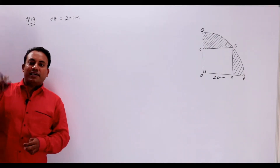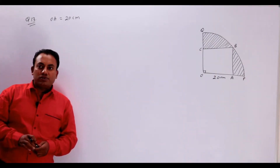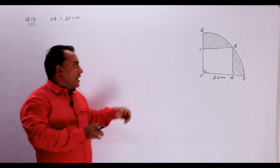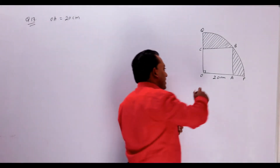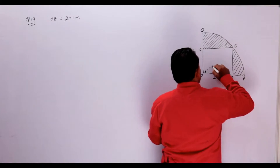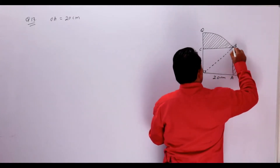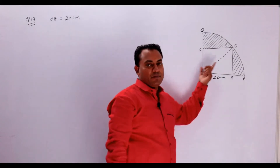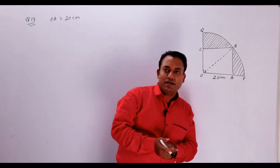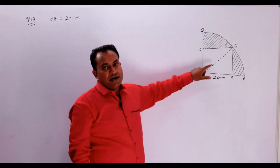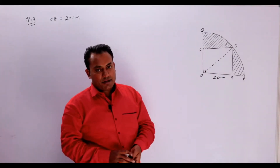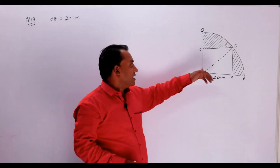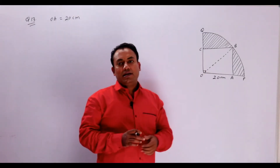Lekin jab hum baat karte hain area of quadrant nikalne ki, usse nikalna abhi aapke liye aasaan nahi hai, kyunki hume radius nahi pata. Radius bachon yahan OP hai, OQ hai. OB hum pata kar sakte hain — OB is quadrant ki radius hai jabki square ka diagonal bhi hai.